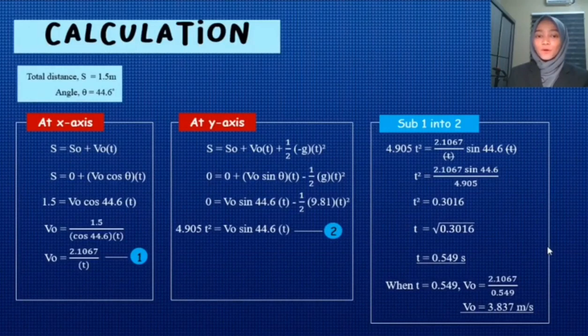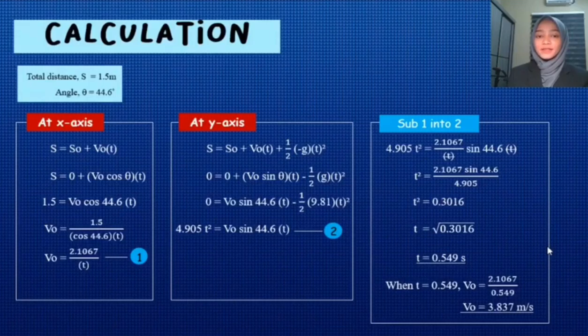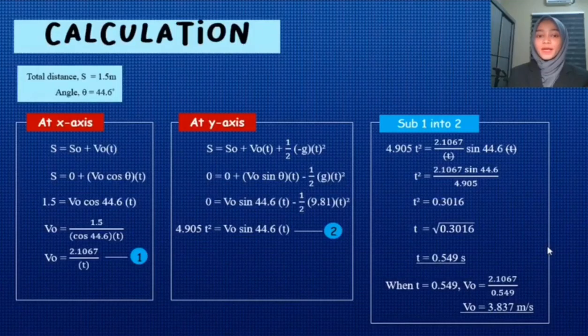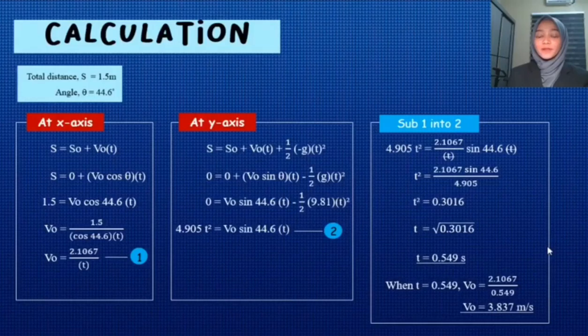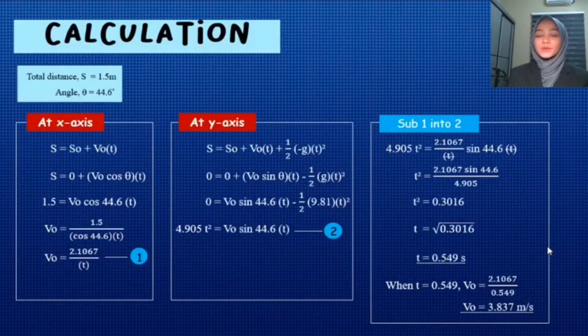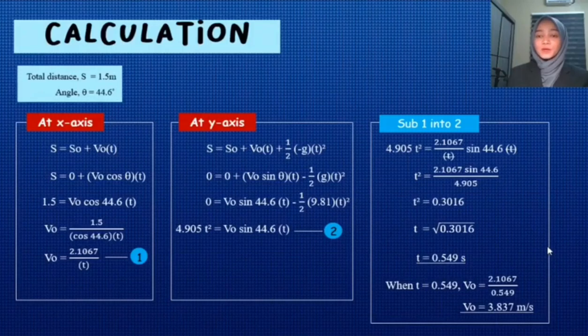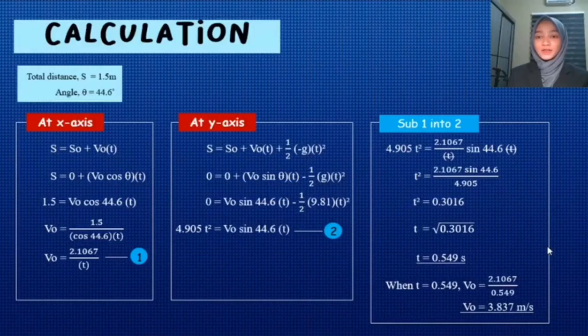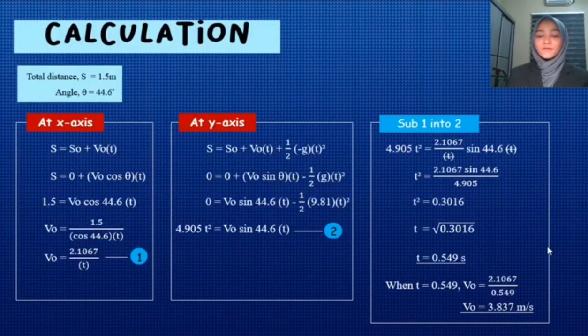And then we will look for y-axis. The value of S and S0 is 0. So we substitute the value of angle and G into the formula and got the second equation which is 4.905 T squared equal V0 sin 44.6 times T. Next, we substitute the first equation into the second equation to get the value of T. So we got T equal to 0.549 seconds. To get the value of V0, we substitute the value of T into the first equation. So it gives us V0 equal to 3.837 meter per second.